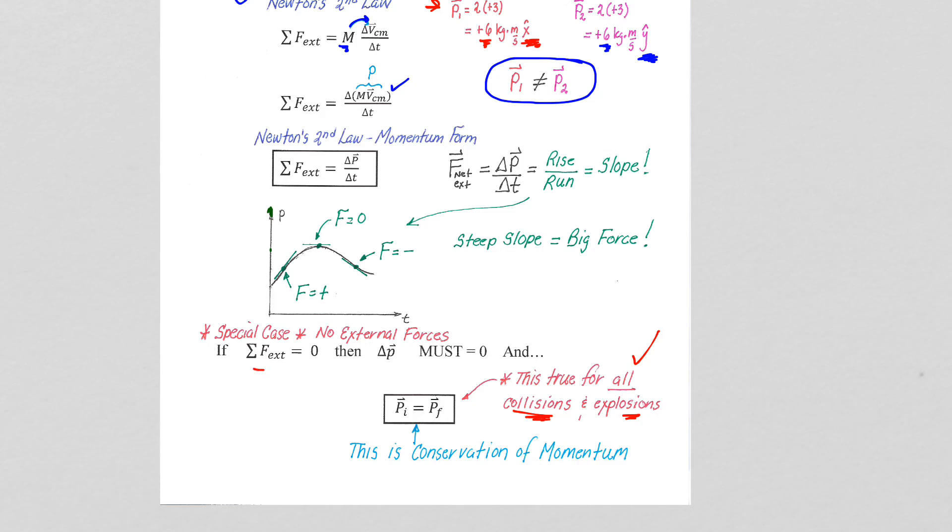When there are no external forces, we get a zero on the left-hand side of this equal sign, which means the right-hand side of the equal sign has to be zero. And the only way the right-hand side of that equal sign can be zero is if delta P itself is zero. So if the left-hand side of the equal sign is zero, delta P must be zero, which means P initial equals P final. That is a statement of conservation of momentum.